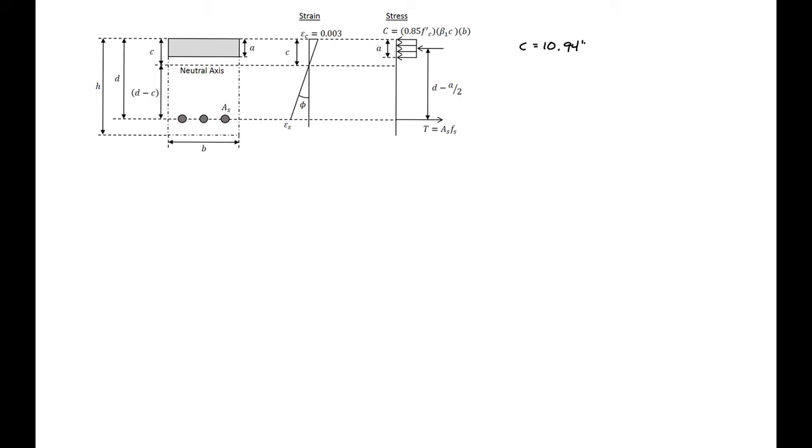So we'll next need to check the actual strain in our steel. So we'll use the same expression that we've been using: 0.003 times d minus C divided by C. And we'll get our steel strain to be 0.00194. So we can see that this is less than our yield strain, so we know we're not yielded. So our assumptions are okay here. We can then use this strain to find our stress in our steel, so 29,000 ksi times our strain in our steel, and we'll get the stress in our steel.